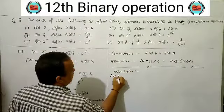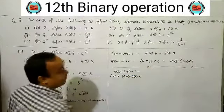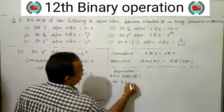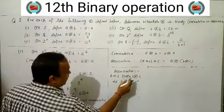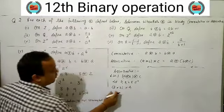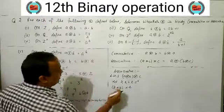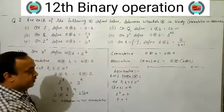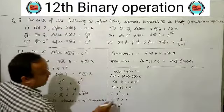Checking associative for a★b = a^b. Left hand side: (A★B)★C with A=2, B=3, C=4. First: 2★3 = 2^3 = 8. Then 8★4 = 8^4.